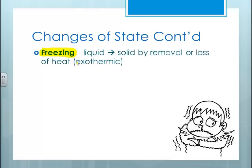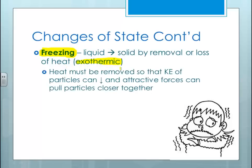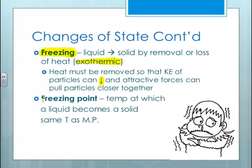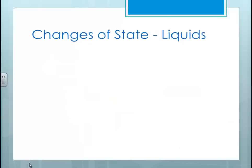Freezing is when we go from a liquid to a solid, and it is an exothermic process — heat must be removed so that the kinetic energy of the particles can decrease and the attractive forces can pull the particles together. The freezing point is the temperature at which a liquid becomes a solid, and it is the same temperature as the melting point. The only thing that changes is the direction: if you're going from a solid to a liquid, we call it the melting point; from a liquid to a solid, we call it the freezing point.